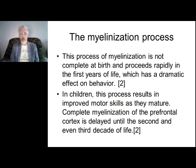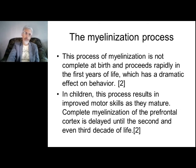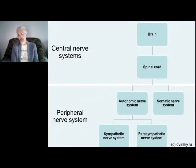Now some words about the myelination process. This is a very important process that starts after birth and finishes around 22 years of age. This process influences mental abilities and motor skills. This is why children have problems with motor activity and cognition — it has a very strong connection with the level of myelination.